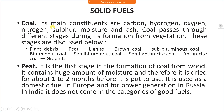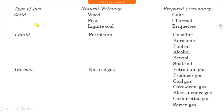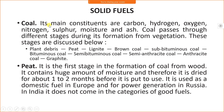In solid fuels we have coal, peat, and lignite. Their main constituents are carbon, hydrogen, oxygen, nitrogen, sulfur, moisture, and ash. Coal passes through different stages during its formation from vegetation. These stages are: plant debris converts to peat, then lignite, then brown coal, then sub-bituminous coal, then bituminous coal, semi-bituminous coal, semi-anthracite coal, anthracite coal, and finally graphite.